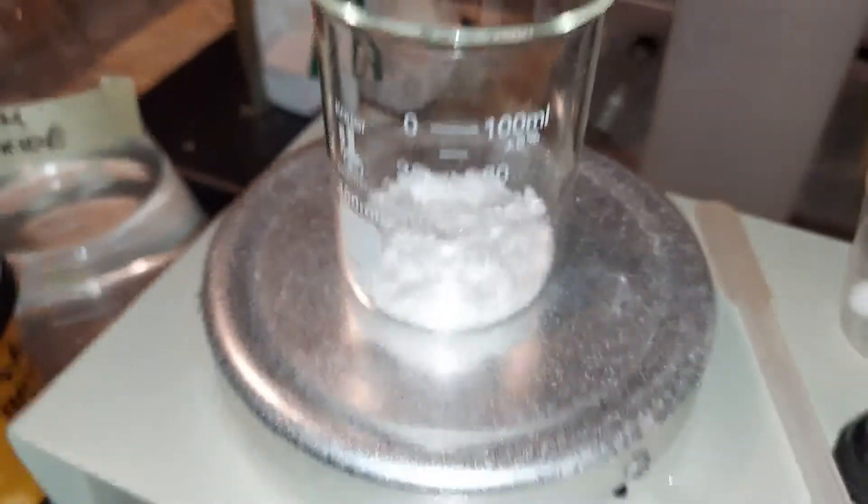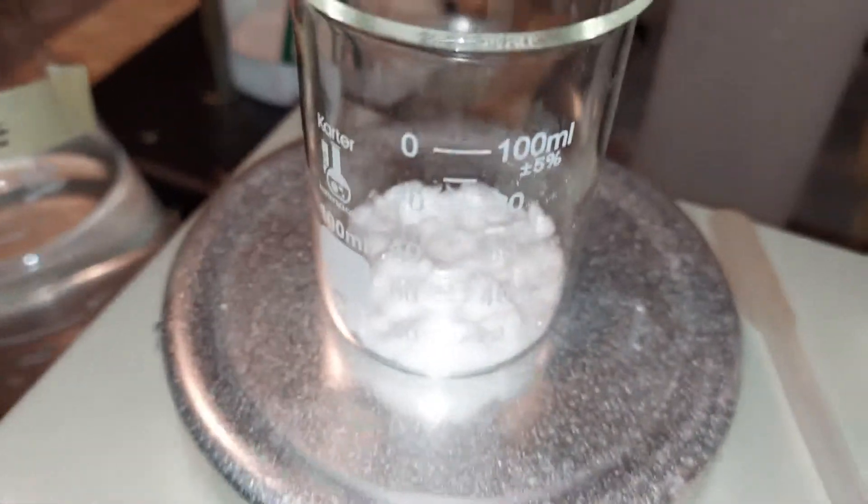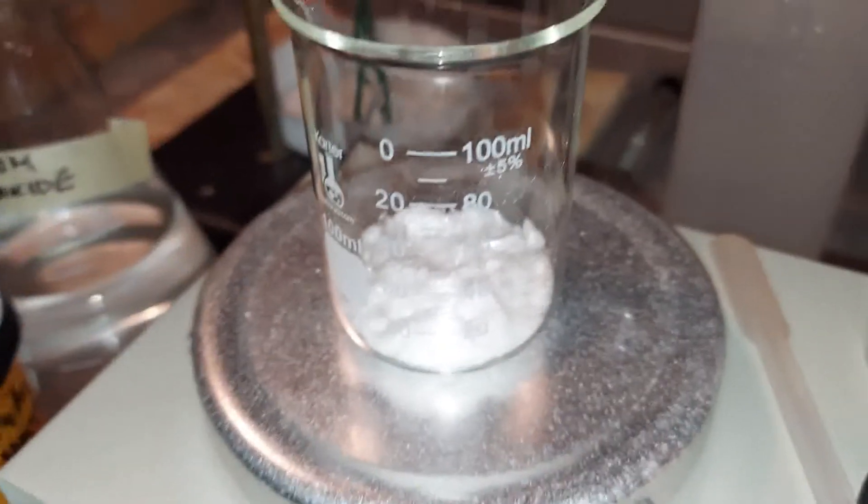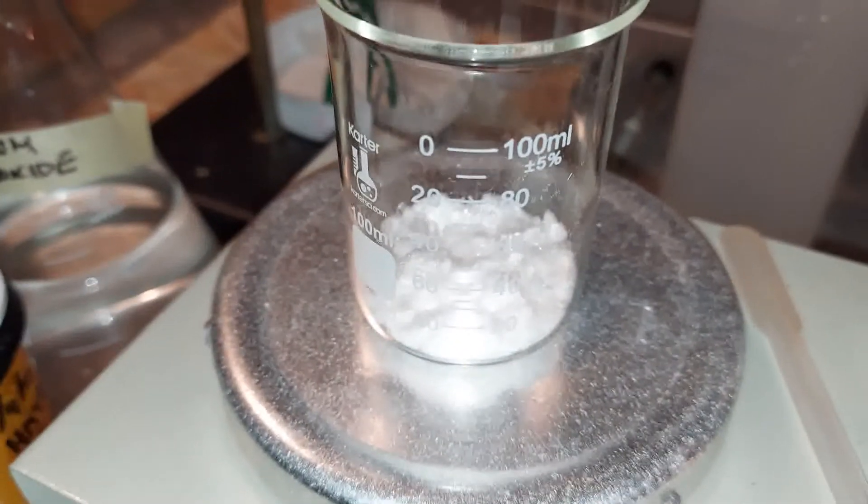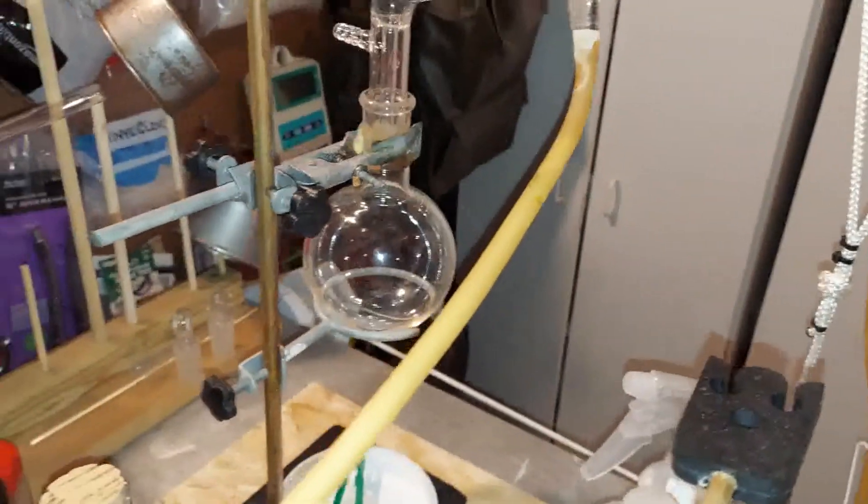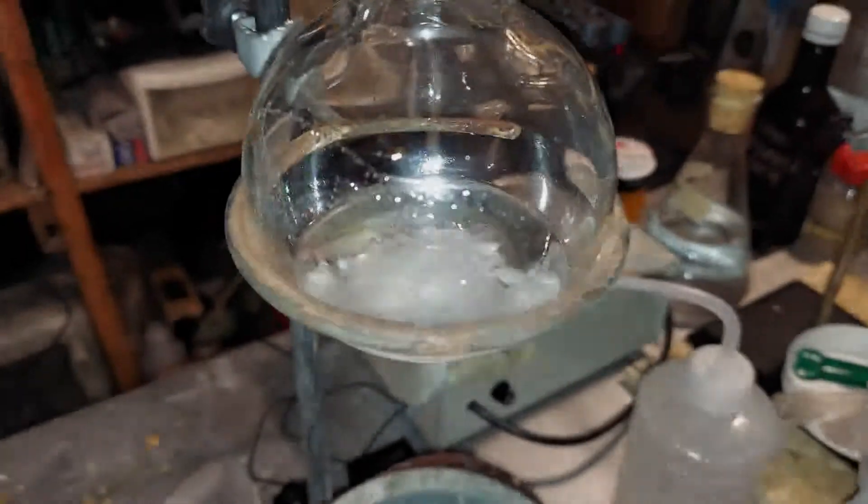All right, here is the calcium chloride. It's been heating for a good, I don't know, 10-15 minutes. It should be pretty free of water by now. There's approximately 10 grams there, and I'm going to be next adding it to here, which is our chloroform, which will be connected to our distillation apparatus.